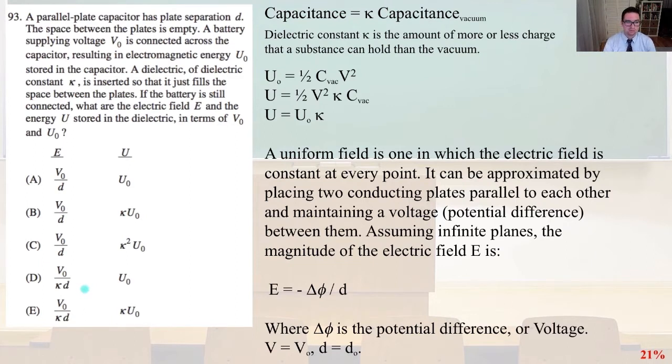So our capacitance equals kappa times the capacitance of the vacuum, and the dielectric constant kappa is the amount of more or less charge a substance can hold in the vacuum. And so U is going to equal U₀ times kappa. So a uniform field is one in which the electric field is constant at every point. It can be approximated by placing two conducting plates parallel to each other and maintaining a voltage, which is the potential difference between them. Assuming infinite planes, the magnitude of the electric field E is E equals negative delta phi divided by D, where delta phi is the potential difference or voltage. And so all of that results in answer B.